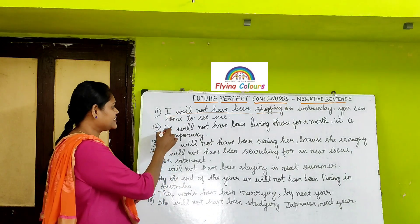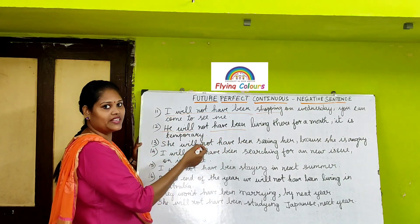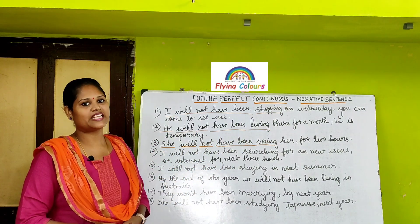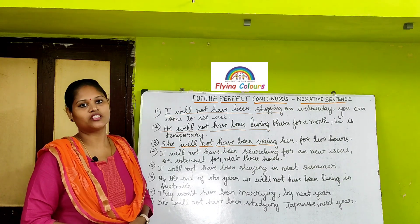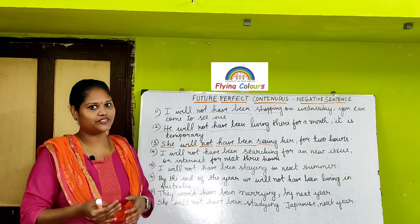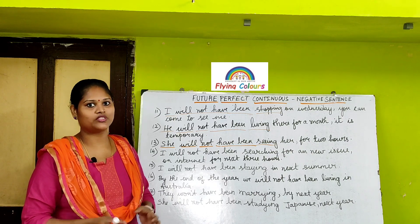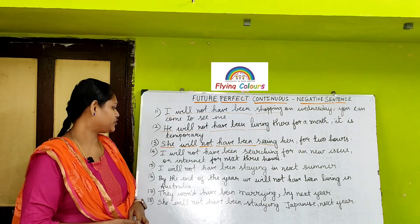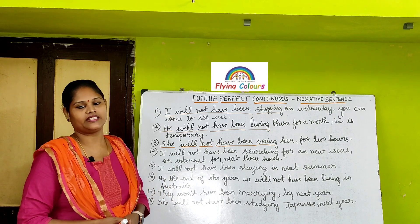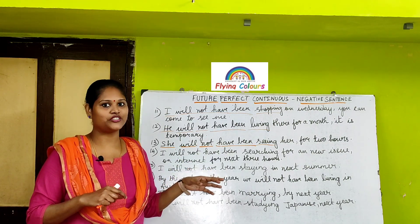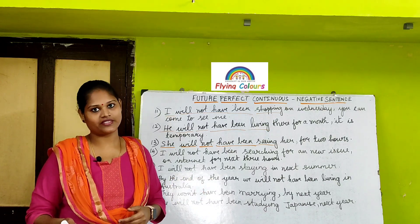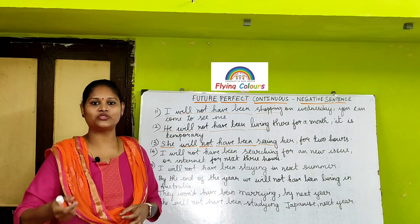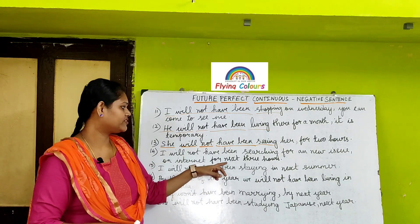In that sentence, he is the subject, will and have been are modal auxiliary verbs or helping verbs, not is the negative, and living is the present participle. She will not have been seeing her for the duration of two hours — she started seeing her and it continues in the present but won't continue in the future for a period of two hours. I will not have been searching for an issue on the internet for the next three hours — started searching in the past, continuing in the present, but this searching action won't continue in the future for three hours.